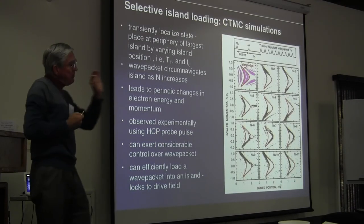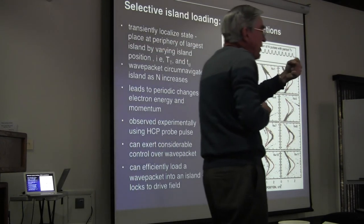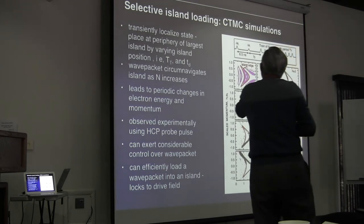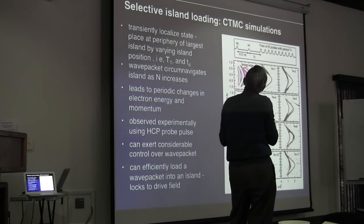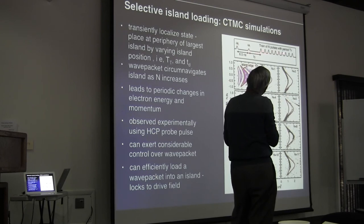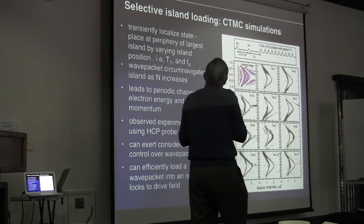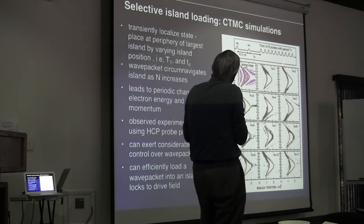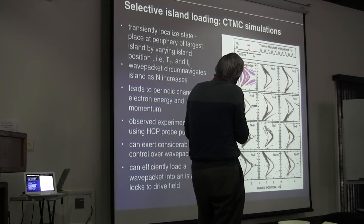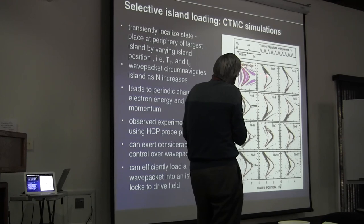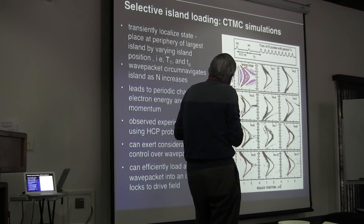We are now able to transiently localize the state of a quasi-1D atom. The question is: can we load it into one of these Floquet states? We localize a wave packet with a kick, then give it another kick to load it into the island associated with a train of half-cycle pulses. The answer is yes — you can load it very efficiently. For example, choosing to load the periphery of the principal stable island, the kick strength and timing are set to place the initial state at the island's periphery. After one kick, the state is there, and as the kicks continue, the state moves around the periphery of the island, always staying captured within it.